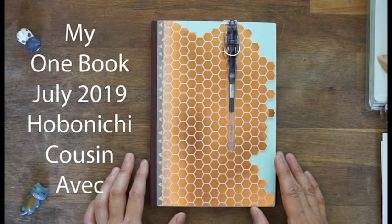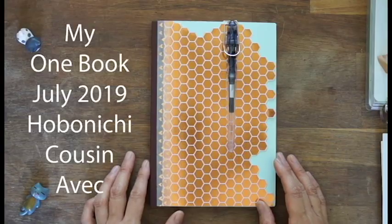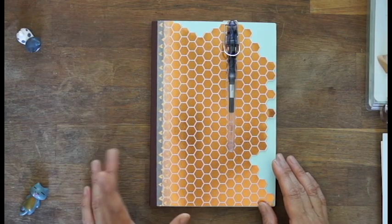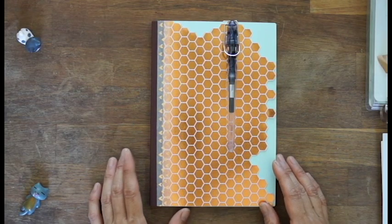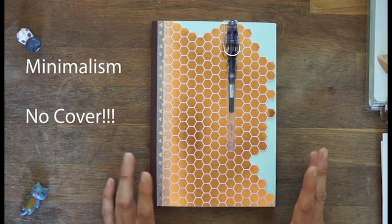This is my one book July setup for 2019. I'm going to do the theme of bullet journaling, which I already covered in my last video. I'm also going to work on a theme of minimalism.